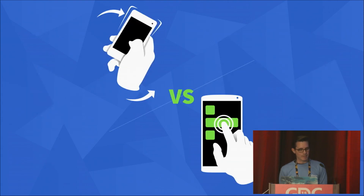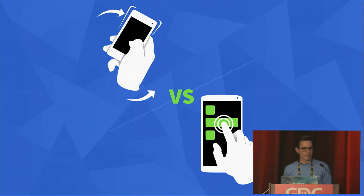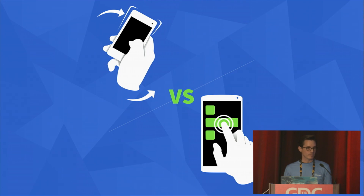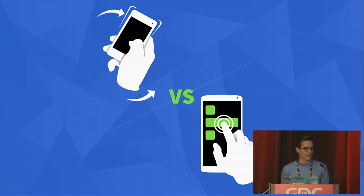When deciding on the game's input method, consider the key characteristics of the game: What is the pace? Is there public versus private information? Is there multiplayer? Being aware of how these characteristics will affect gameplay will help you make decisions around your input mechanics.